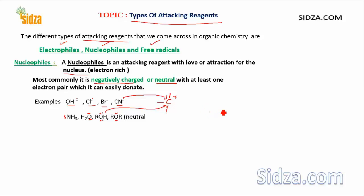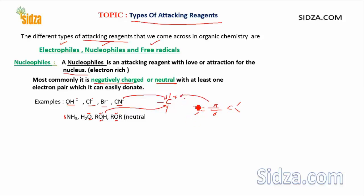Alkenes with double bonds can also act as nucleophiles. We know that alkenes have a sigma bond and a pi bond, and the pi bond is a weak bond. Therefore, these pi electrons can form a bond, and this pi electron system can also attack on an electron-deficient center. That's why alkenes sometimes act as nucleophiles.